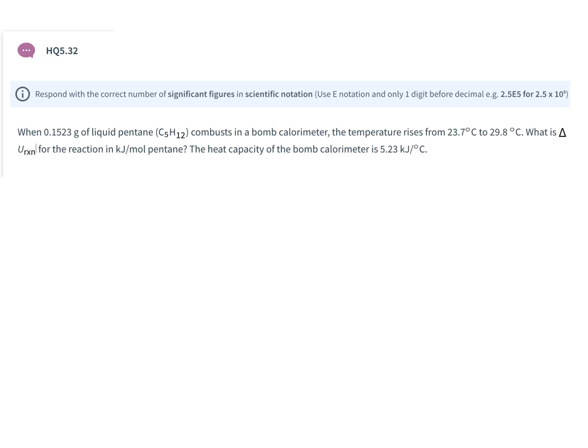the temperature of the bomb calorimeter rises from 23.7 degrees to 29.8 degrees Celsius. What is the change in energy for that reaction in kilojoules per mole pentane? Given the heat capacity of the bomb calorimeter is 5.23 kilojoules per degree Celsius.